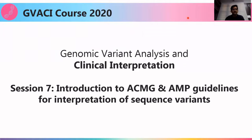Good evening, everyone, and welcome to session seven of genomic variant analysis and clinical interpretation. In this session, I will be talking about the introduction of ACMG and AMP guidelines used for interpretation of sequencing variants. ACMG stands for American College of Medical Genetics and Genomics, and AMP stands for Association of Molecular Pathology. These are nonprofit organizations composed of clinicians and geneticists who designed these guidelines for the interpretation of variants.